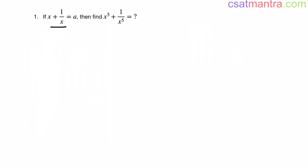If x plus 1 by x is equal to a, then find x power 5 plus 1 by x power 5. This question is slightly opposite set, but no rocket science involved. Very easy question. You can find similar questions in public service commissions, SSC, bank exams, railways, NDA, and other competitive exams. This question is from algebra.